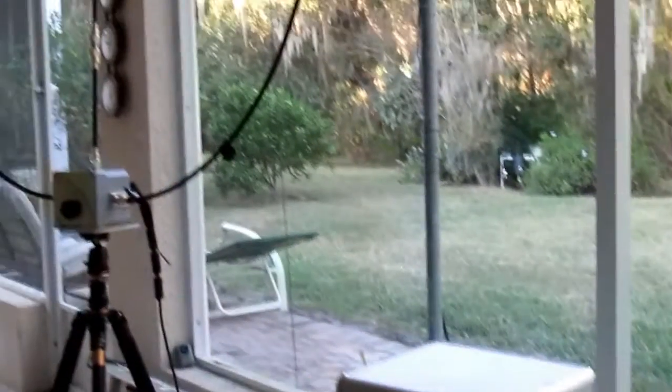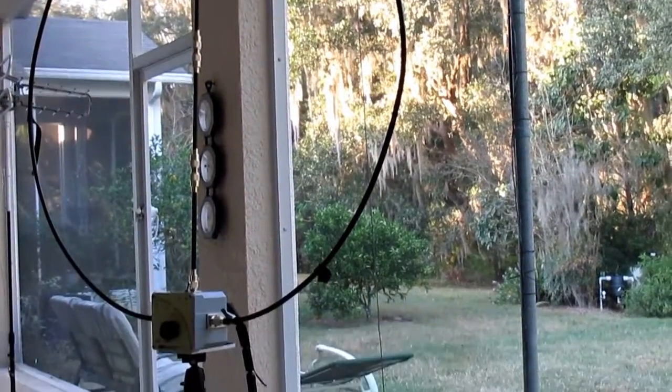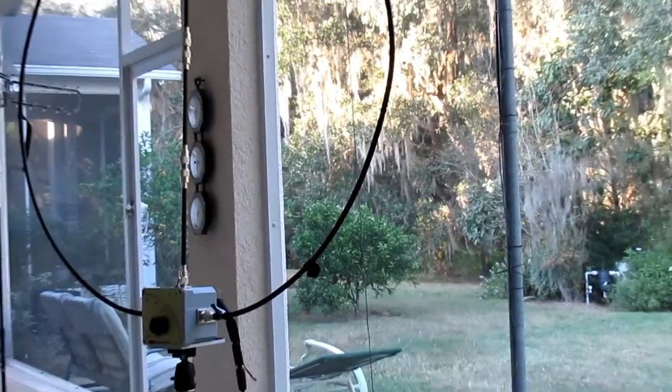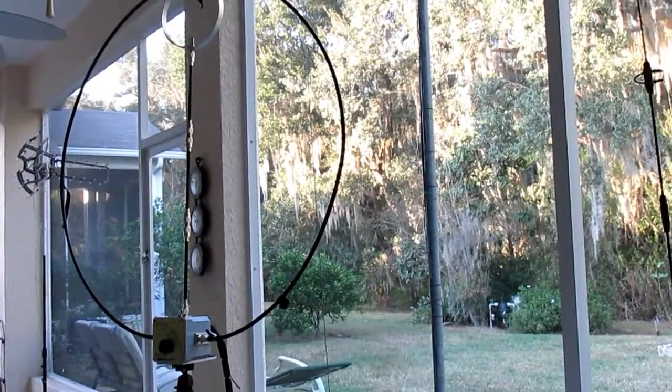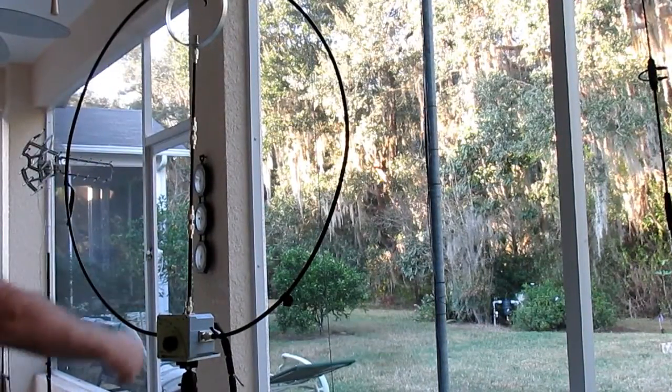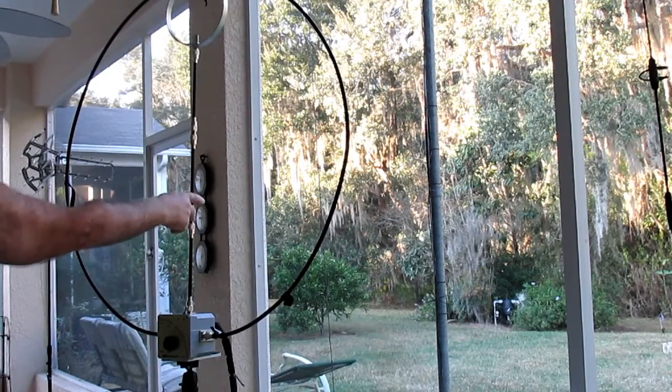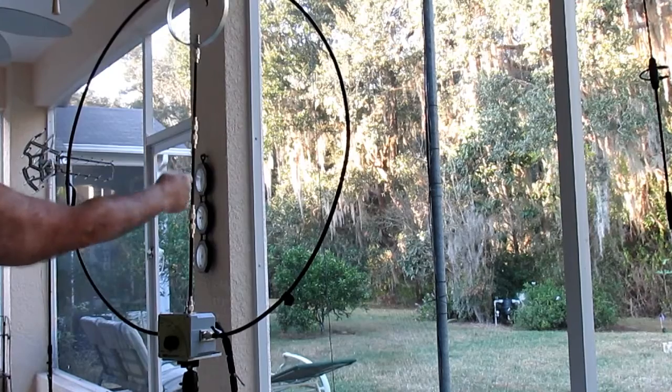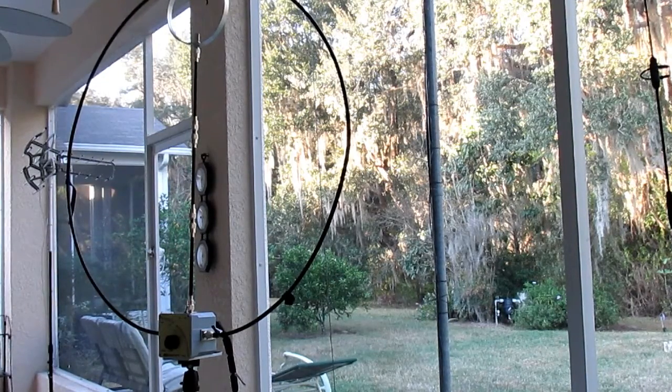As you can see, there's my Chameleon F Loop. What I did to it was I added an extra section. You see the original loop, it's too small diameter. So to get another hard line, I had to buy a kit of two just to use three of them. And once you increase the loop, the efficiency is fantastic.